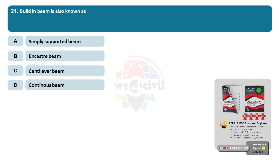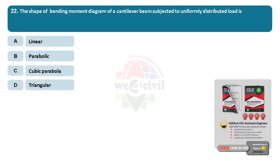Question 21: Built-in beam is also known as? Options: A, simply supported beam. B, encasted beam. C, cantilever beam. D, continuous beam. Answer: Option B, encasted beam. Question 22: The shape of bending moment diagram of a cantilever beam subjected to uniformly distributed load is? Options: A, linear. B, parabolic. C, cubic parabolic. D, triangular. Answer: Option B, parabolic.